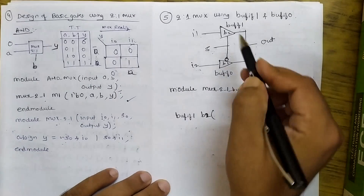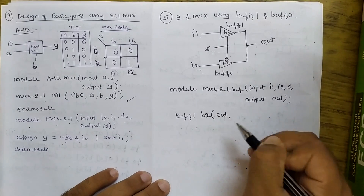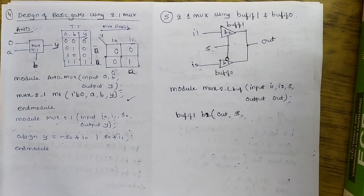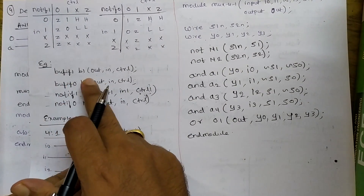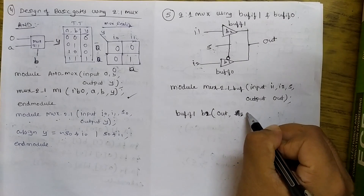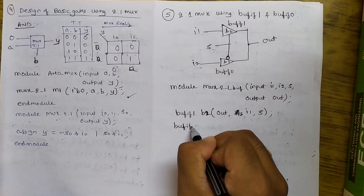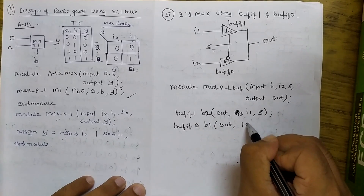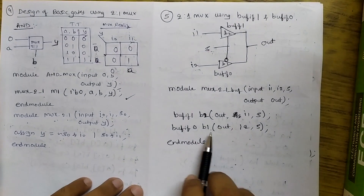For bufif1, I label it B2. The port order is: output (out), then input (I1), then control signal (S). For bufif0, label it B1, with output (out), input (I2), and control signal (S). End module. This completes the 2-to-1 MUX code using bufif1 and bufif0.